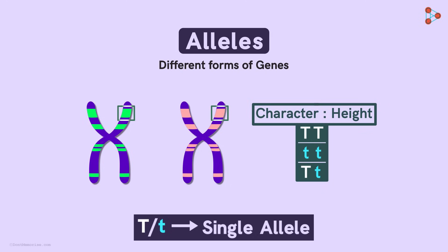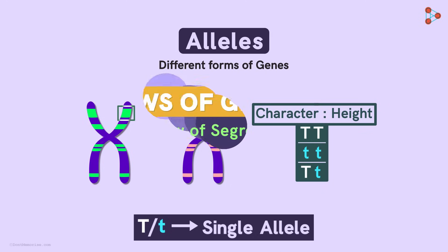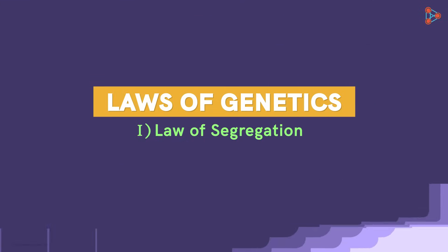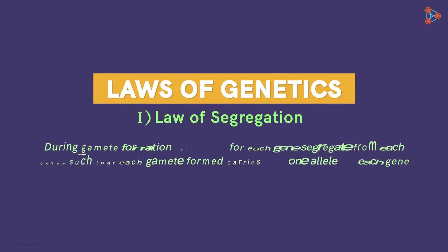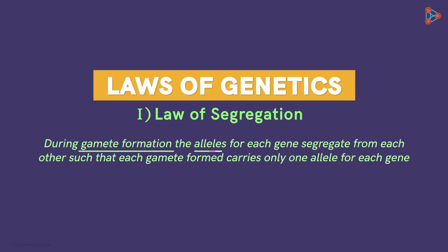Now that we know what alleles are, let's try to understand the law. There are different definitions you will find for this law, but the simplest one says that during gamete formation, the alleles for each gene segregate from each other such that each gamete formed carries only one allele for each gene.